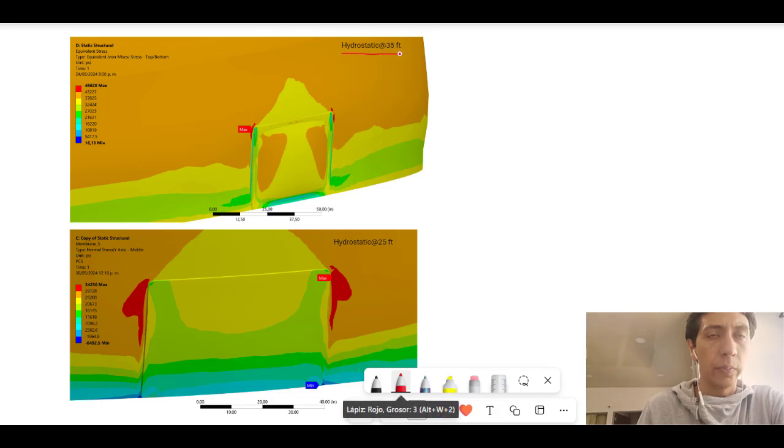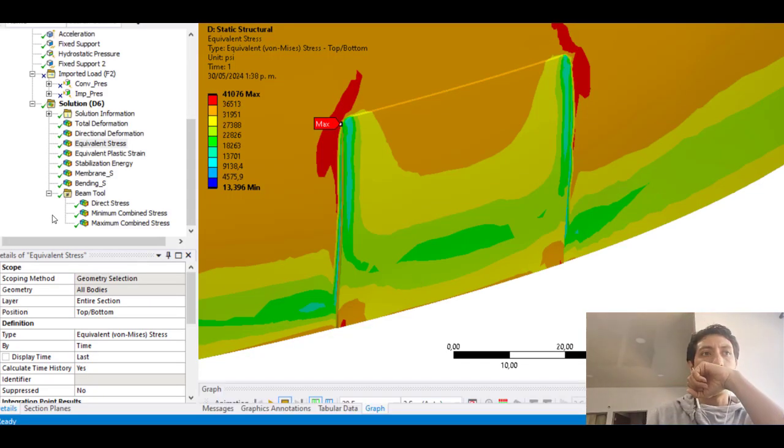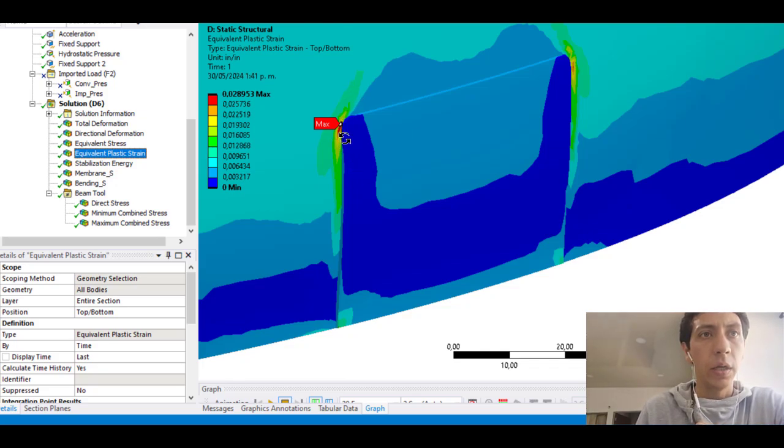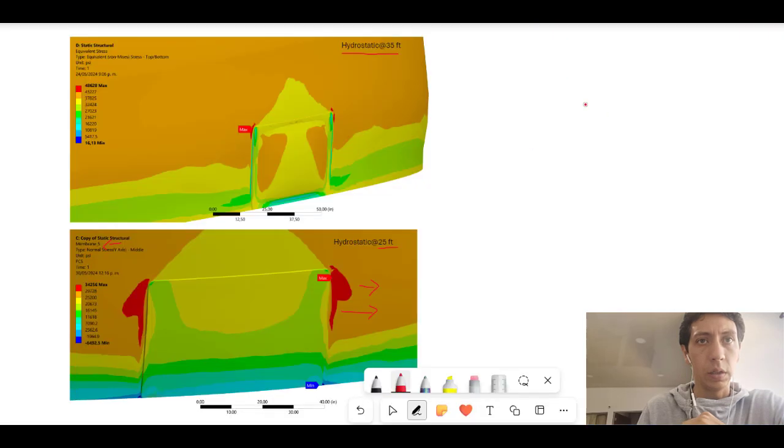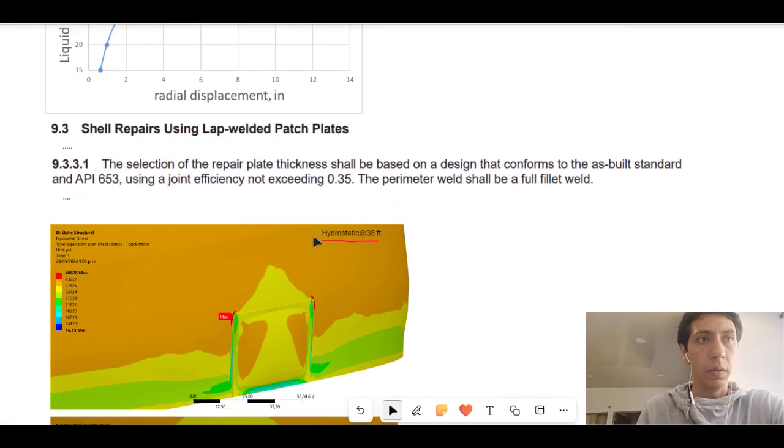Here we have the equivalent von Mises stress. This for hydrostatic pressure of 25 feet. The maximum values are around the corner. And this is the membrane stress distribution for the hydrostatic load at 25 feet. The maximum values are in this direction. And here, for example, we can see how the plastic strains were the maximum at the round corners. How do we deal with this? Because it's on the standard. We need to deal with this value. Okay, let's see it with the elastic analysis. This is how finally we solve this problem.